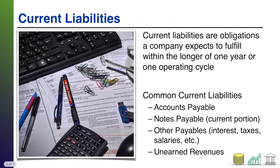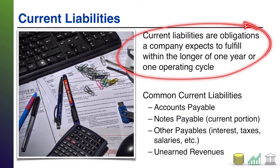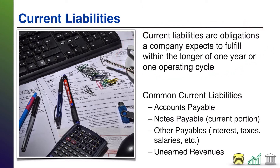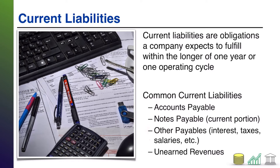Notes payable is a type of liability. Depending on the length of that note, it could be a long-term liability or it could be a short-term liability. When you classify things as current liabilities or short-term liabilities, it's because you expect to pay off the obligation within one year, or one operating cycle should your operating cycle last longer than a year. Common current liabilities involve accounts payable, notes payable, and other miscellaneous payables.